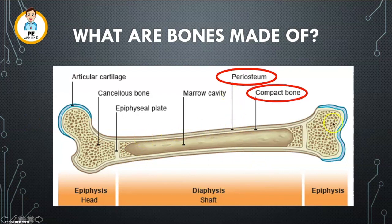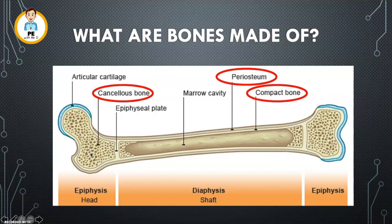Next we have the compact bone. This is the next layer in and is a hard protective surface. Number three we have cancellous bone or spongy bone. As you can see here, no prizes for guessing where it gets its name from. This is in a honeycomb formation which gives it super duper strength and lightness. This helps keep our bones strong.